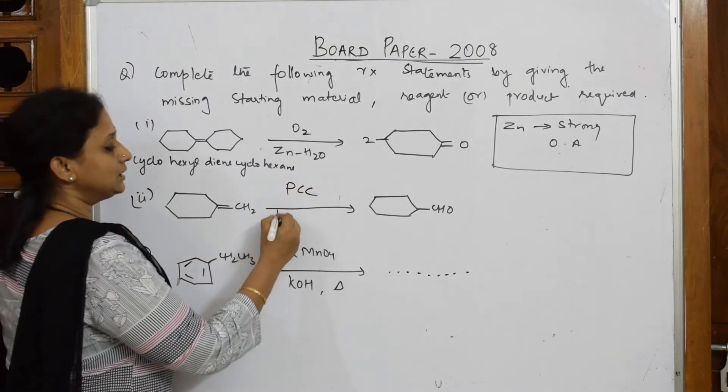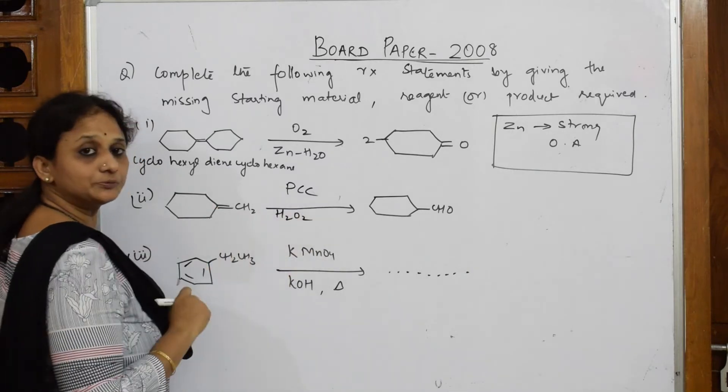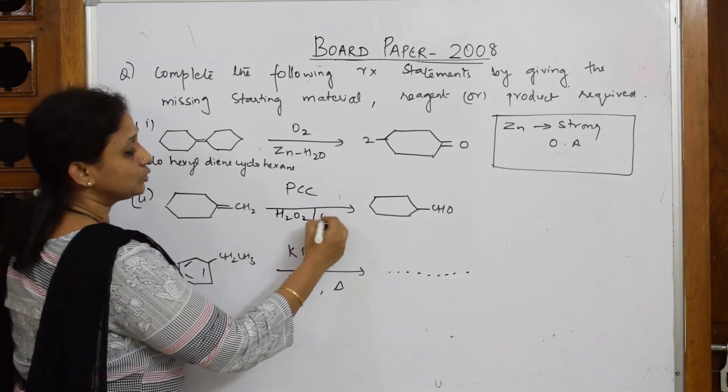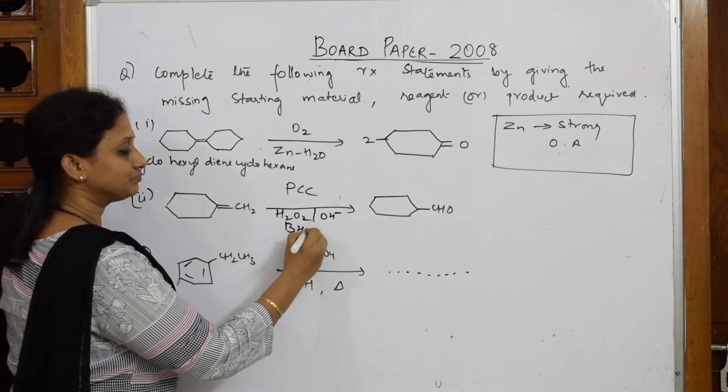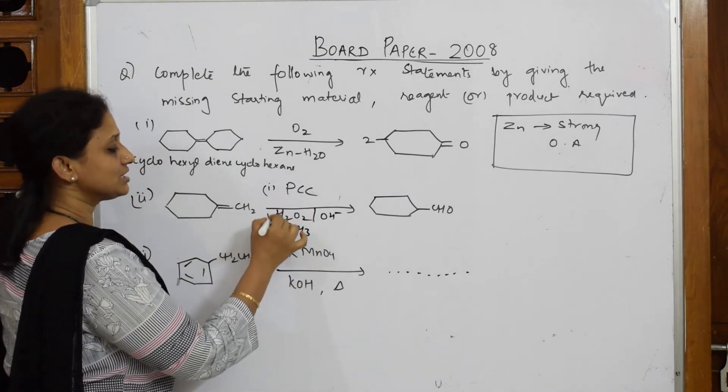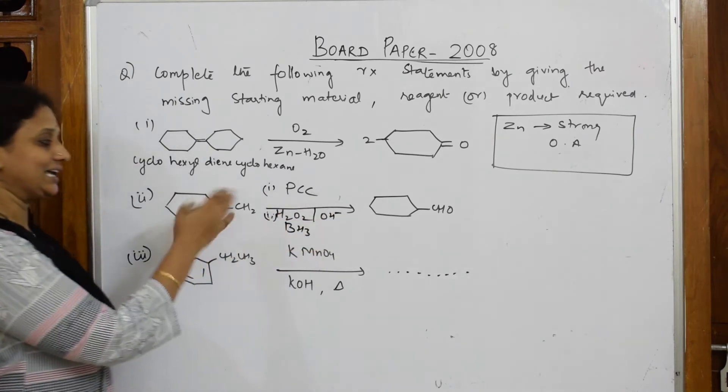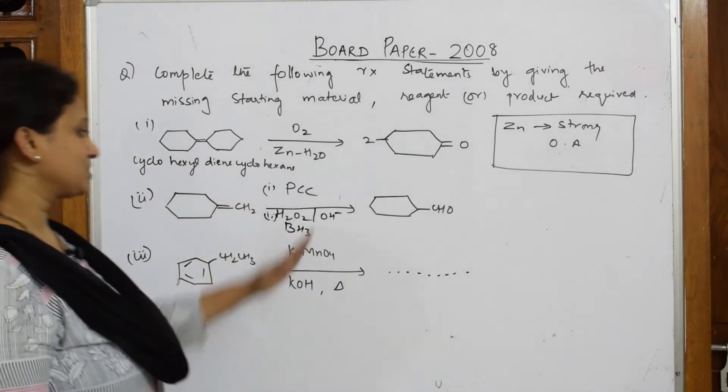If you further remember, hydrogen peroxide also in base medium, and there's also BH3 - all three reagents can be used for converting alkenes to aldehydes. Simple.